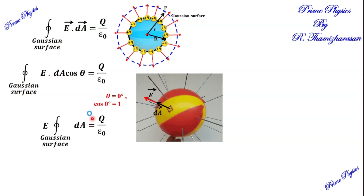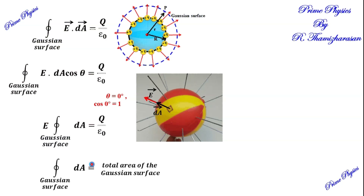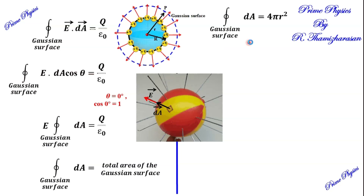If we substitute the cos theta value (which is 1 since angle is 0), E is constant and can be taken outside the integral. We then integrate the small area dA over the entire sphere. The area of a sphere is 4πr², so integrating gives us the total area 4πr².